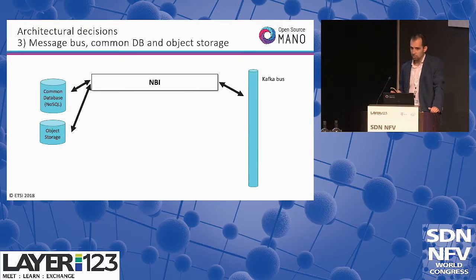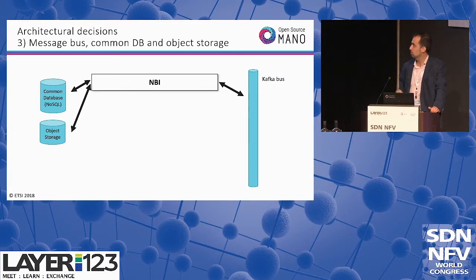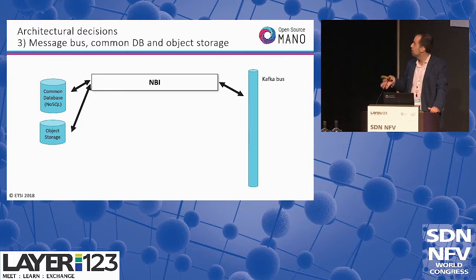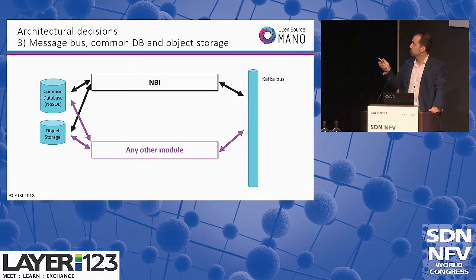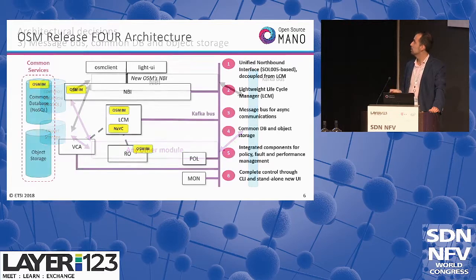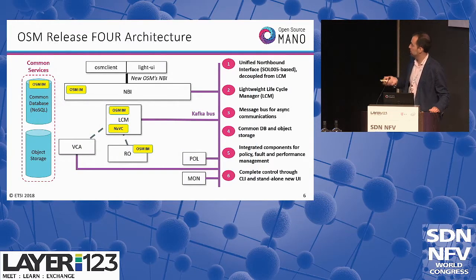Finally, we decided to include three main blocks: the Kafka bus, a common database based on NoSQL like MongoDB, and an object storage system. The idea is that the NBI can talk directly to these different components depending on the API call. Not only the NBI, but any other module can also interface with the Kafka bus, common database, and object storage, facilitating communication between the NBI and any other module through these three mechanisms. As a result, this is the architecture that Vanessa has presented.